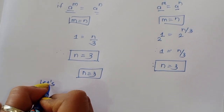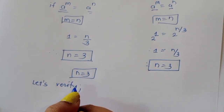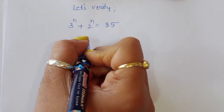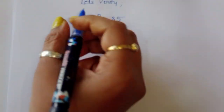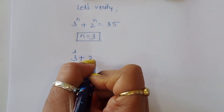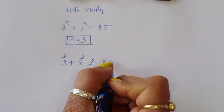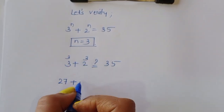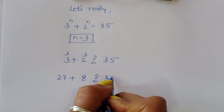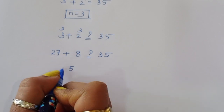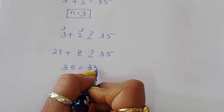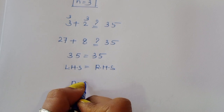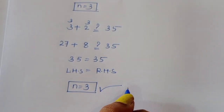Verification: 3^3 + 2^3 = 27 + 8 = 35. LHS equals RHS. So the value of n = 3 is correct.